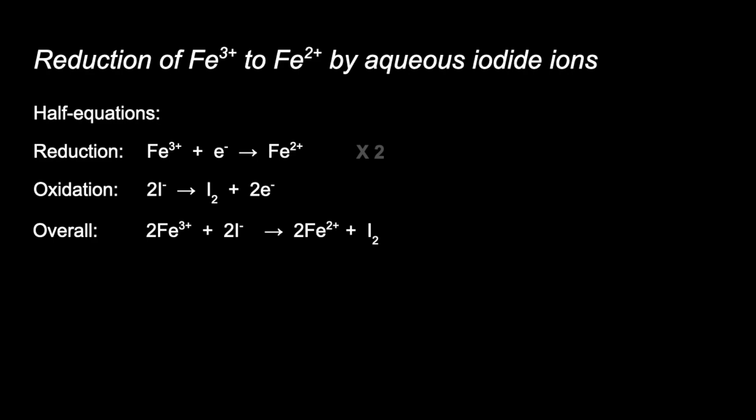For the associated colour changes: we've already seen that Fe³⁺ ions give a pale yellow solution, and the predominant colour on the product side is iodine's brown colour. So the colour change is pale yellow to brown.